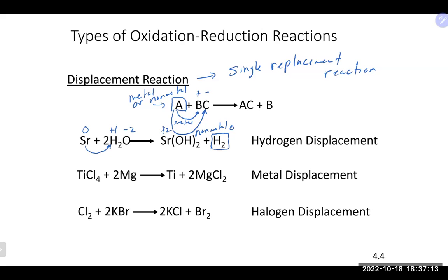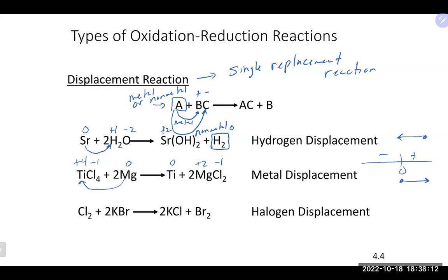A metal displacement example: magnesium (oxidation state zero) reacts with titanium(IV) chloride (Ti is +4, Cl is −1). Magnesium comes in and kicks out the titanium. Titanium metal comes out with zero oxidation state, and magnesium gains a +2 charge. Chloride stays at −1 — it's a spectator ion. Titanium went from +4 to 0 — being reduced. Magnesium went from 0 to +2 — being oxidized. The magnesium transfers electrons to the titanium.